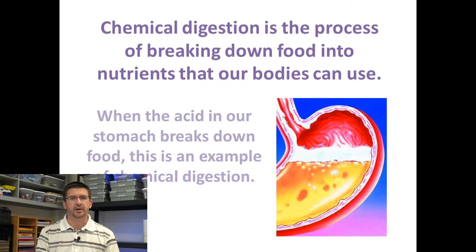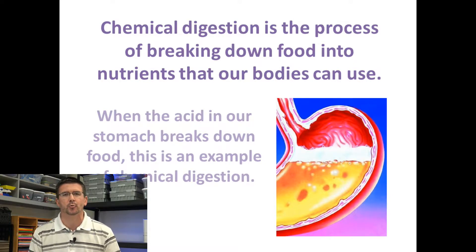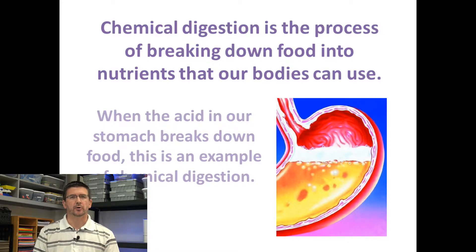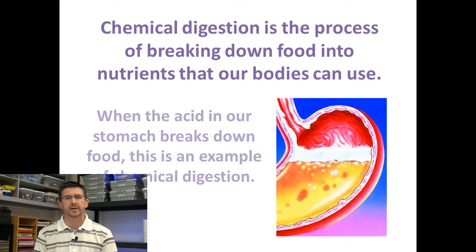The second type of digestion is called chemical digestion, and chemical digestion is basically digestion that happens as a result of a chemical reaction. Things like the saliva in our mouth softening our food with enzymes working to start breaking it down, the hydrochloric acid, the pepsin, and the other enzymes in our stomach working to break that food down. This chemical digestion is what actually breaks it down on a cellular level and gets the nutrients out that our body is able to use.